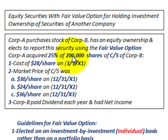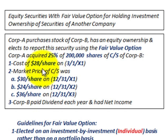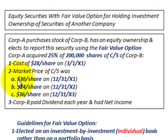Corporation A acquired 25% of the 200,000 shares of common stock of Corporation B, and they paid $28 per share. Using this fair value option, we look at the fair value or market price of those shares for each of the next reporting periods — three years. End of year one: $30 per share. Year two: $24 per share. Year three: $36 per share.